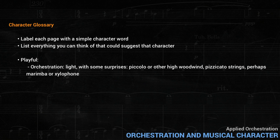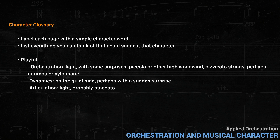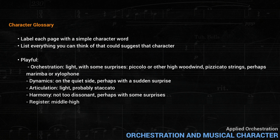It might look something like this. Orchestration: light with some surprises, piccolo or other high woodwind, pizzicato strings, maybe marimba or xylophone. Dynamics on the quiet side, perhaps with a sudden surprise. Articulation: light, probably staccato. Harmony: not too dissonant, perhaps with some surprises. Register: middle to high. There's lots of room for other possibilities, and sometimes we could even do something a bit unusual. For example, I could even imagine a passage for double basses that would sound playful — say a light pizzicato with some rhythmic surprises.